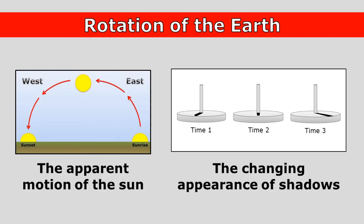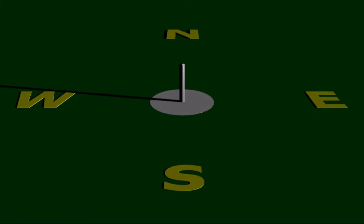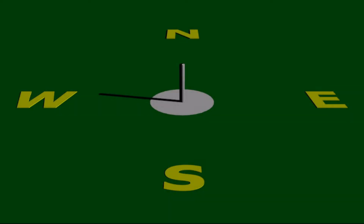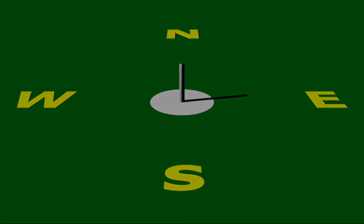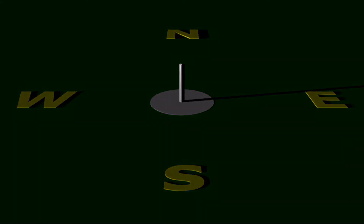The changing appearance of shadows is caused by the rotation of the earth, and shadows change throughout the day in a very predictable pattern. Shadows are longest at the very beginning and the very end of the day, and they are shortest around noon. And shadows appear on opposite sides of an object in the morning and in the afternoon.